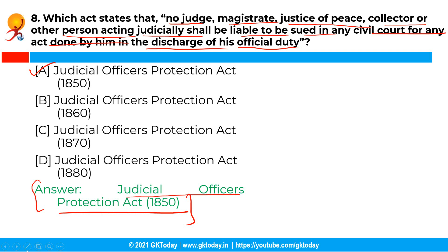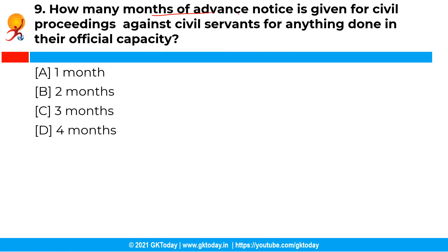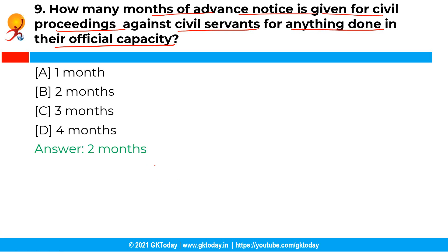The next question is: how many months of advance notice is given for civil proceedings against civil servants for anything done in their official capacity? The correct answer is option B, two months. Civil proceedings can be instituted against civil servants in India for anything done in their official capacity after giving two months' advance notice to them. However, no such notice is required when the action is brought against them for acts done outside the scope of their official duties.